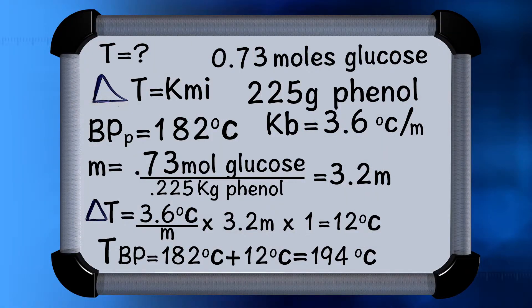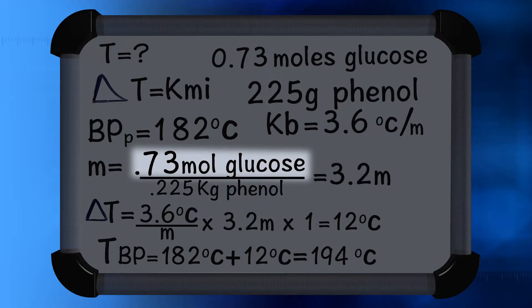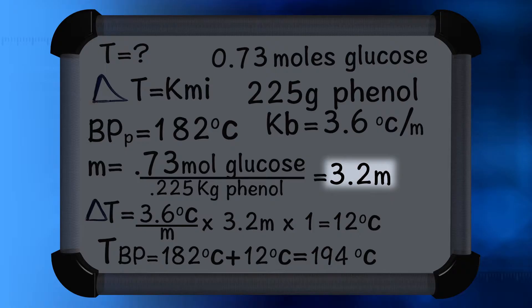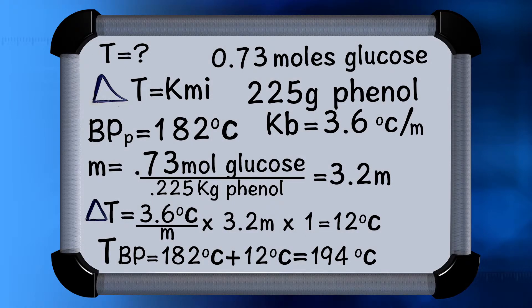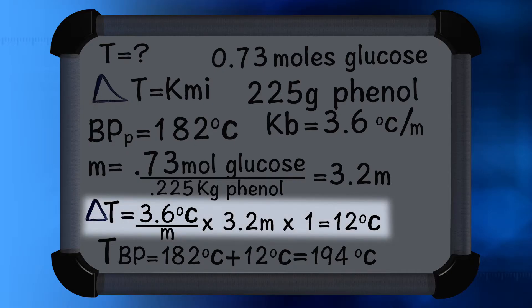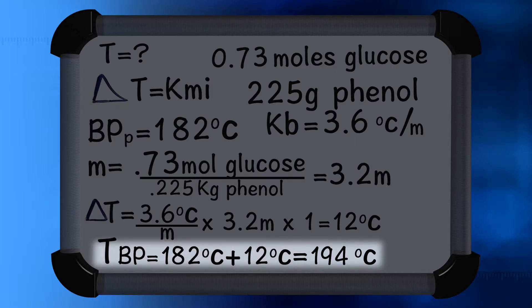Team 1, walk us through your calculations. Molality is moles of solute divided by kilograms of solvent. In this case, we have 225 grams of solvent phenol, which equals 0.225 kilograms. So 0.73 moles of glucose divided by 0.225 kilograms of phenol is 3.2 molal. I is going to be 1, since the solute is glucose, which is a covalently bonded compound that stays as one molecule when dissolved. From our chart, the boiling constant Kb of phenol is 3.60 degrees Celsius per molal. Solving for delta T, we found an answer of 12 degrees Celsius, which means the boiling point of this solution would actually be 194 degrees Celsius — 12 degrees higher than the normal boiling point of phenol alone, which is 182 degrees.